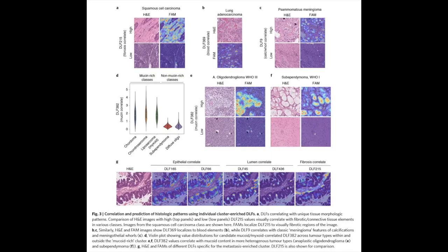Instead of looking at the network as a whole, our team deconstructed the information within the network into smaller units so that they can be analyzed separately, much like an isolated circuit in the brain. Indeed, this work highlighted that specific components of these artificial neural circuits learned to analyze pathology images much like human experts.